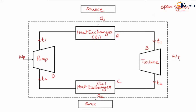Here we are considering four devices: one heat exchanger, a second heat exchanger, one turbine, and one pump. These four devices are connected to each other. One heat exchanger is connected with a source at a particular temperature, and that source transfers heat to the heat exchanger. Another heat exchanger at a different temperature rejects heat to another source, or we can say a sink.